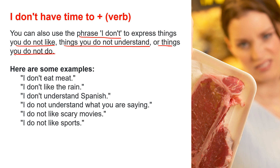Here are some examples. I don't eat meat. I don't like the rain. I don't understand what you are saying. I do not like scary movies. I do not like sports. I don't go to church. I don't speak English. I don't like you. So there are many things you can talk about by using 'I don't' plus verb.